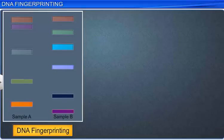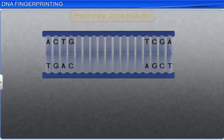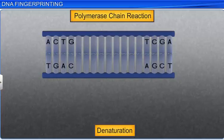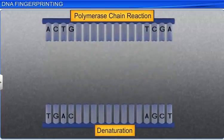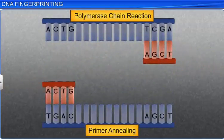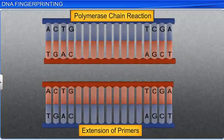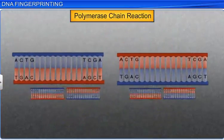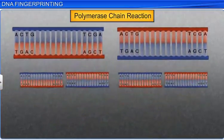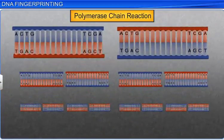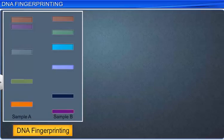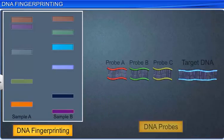Today the accuracy of the DNA fingerprinting technique has further improved due to the advent of the polymerase chain reaction, or PCR, where multiple copies of a single DNA sequence can be made. DNA fingerprinting has also advanced due to the use of different types of DNA probes.